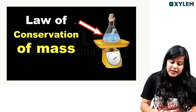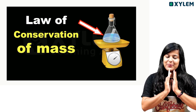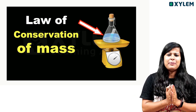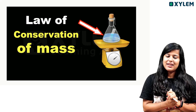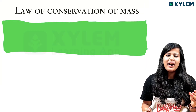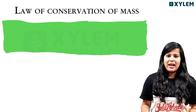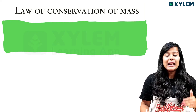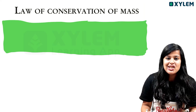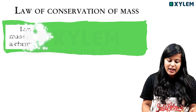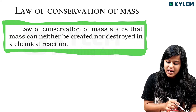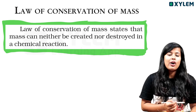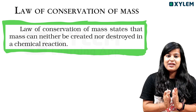The first topic is the Law of Conservation of Mass. If you learn this topic correctly, it's important. It's very simple. The Law of Conservation of Mass states that mass can neither be created nor be destroyed in a chemical reaction.